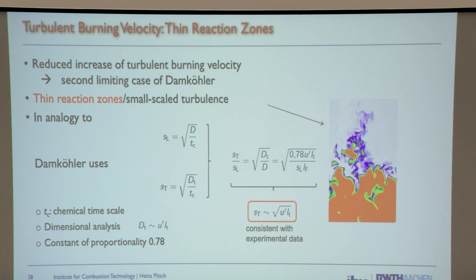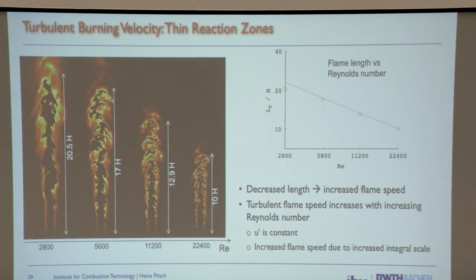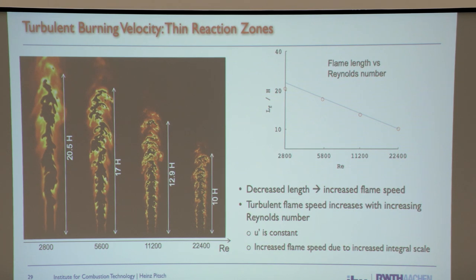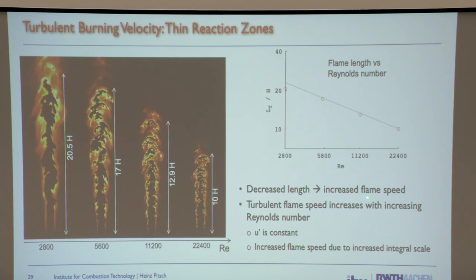This model depends not only on u', but on two parameters: u' and a turbulent length scale. This is what makes it very different from the other model. A DNS evaluation of flame length for a premixed flame shows that as the Reynolds number increases, the flame length decreases, meaning the flame speed has increased.